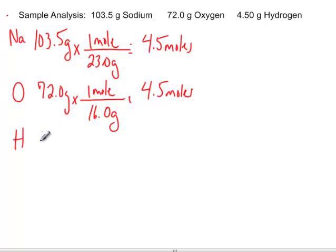Finally, we have hydrogen. We start with 4.5 grams. We look on the periodic table and realize that one mole of hydrogen has a molar mass of 1.0 grams. 4.5 times 1 divided by 1 is 4.5. This is working out nicely.